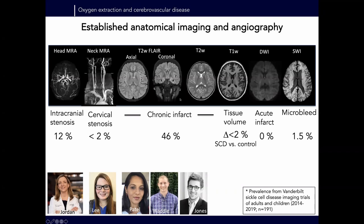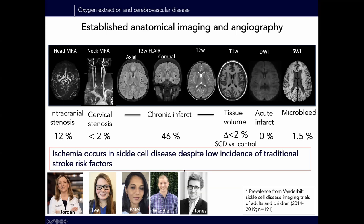We have a large imaging initiative at Vanderbilt where we've scanned about 250 people as part of our sickle cell clinic. Notably, only about 10–15% of these patients have intracranial stenosis, much fewer have cervical stenosis, a small fraction have microbleeds, and tissue volumes are almost normal. But almost half of these patients will have infarcts — silent or overt — by the time they are 30 years old. Whatever is causing these infarcts, it's not traditional stroke risk factors. These projects are also partly led by Lori Jordan, a pediatric neurologist.